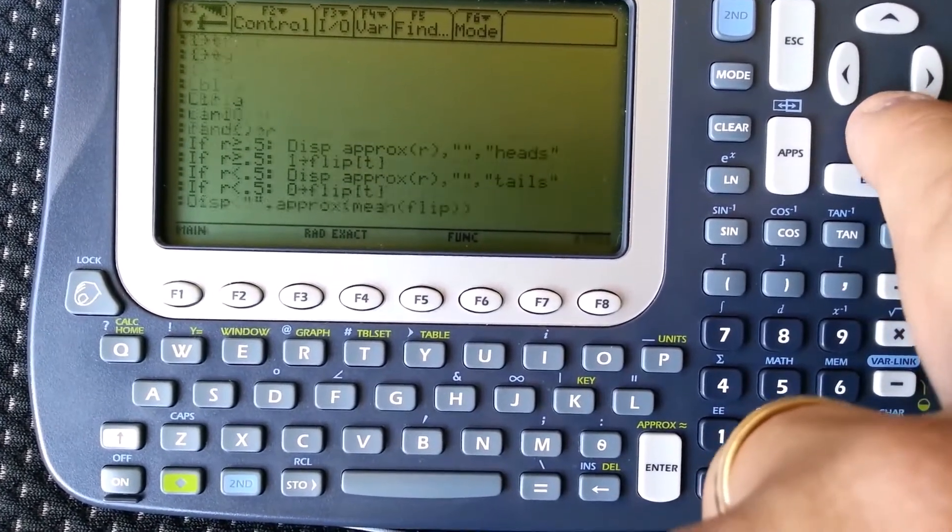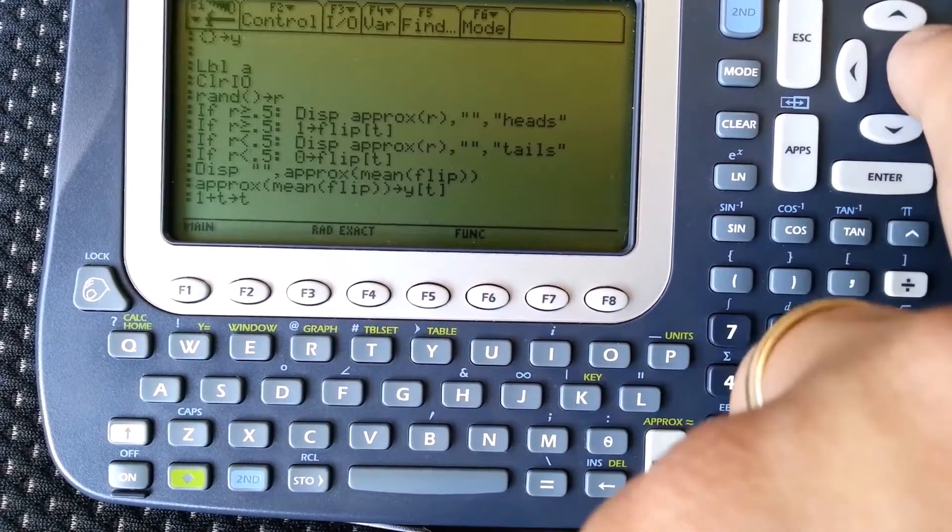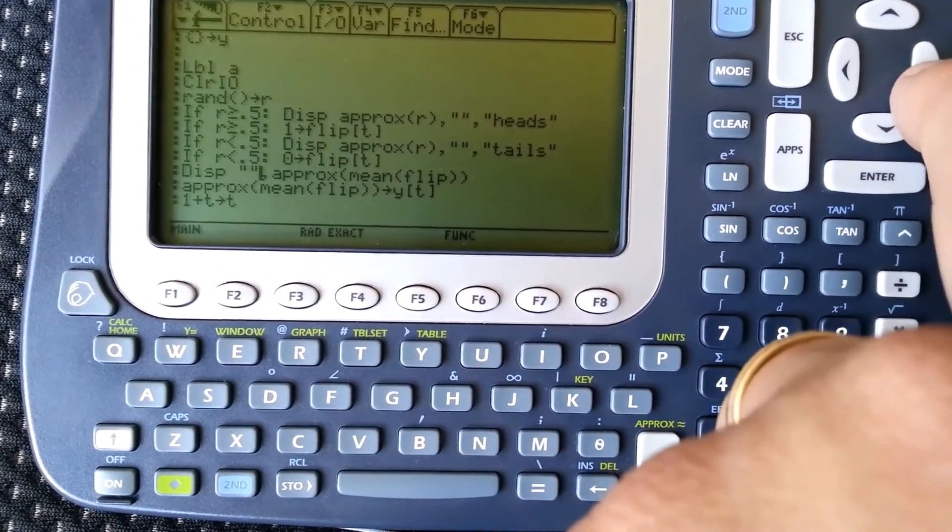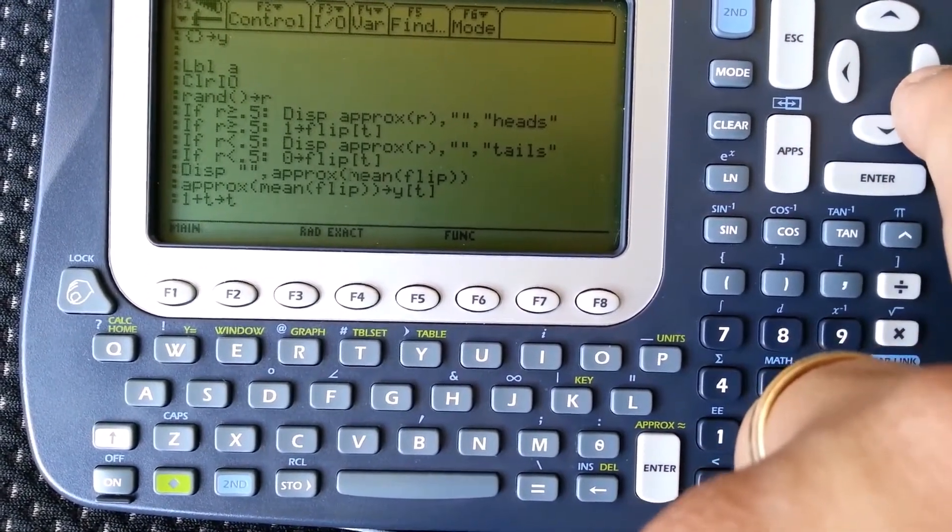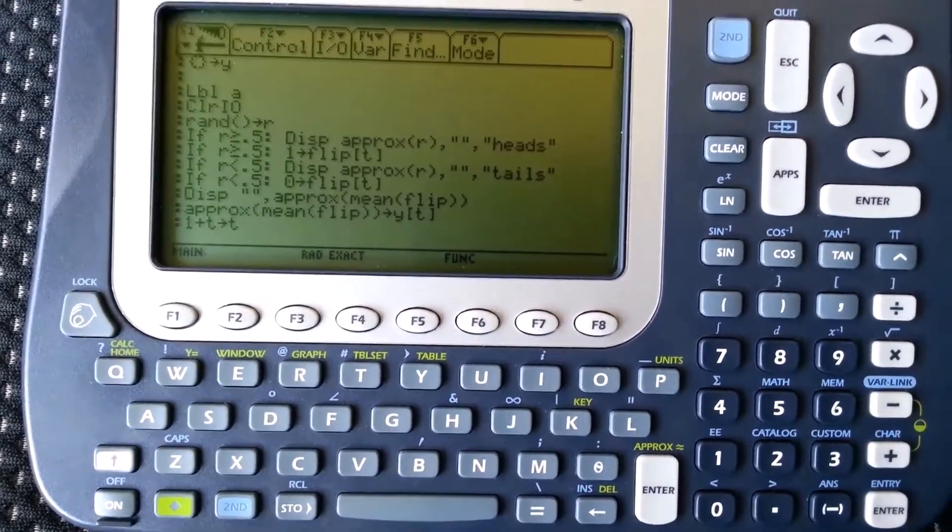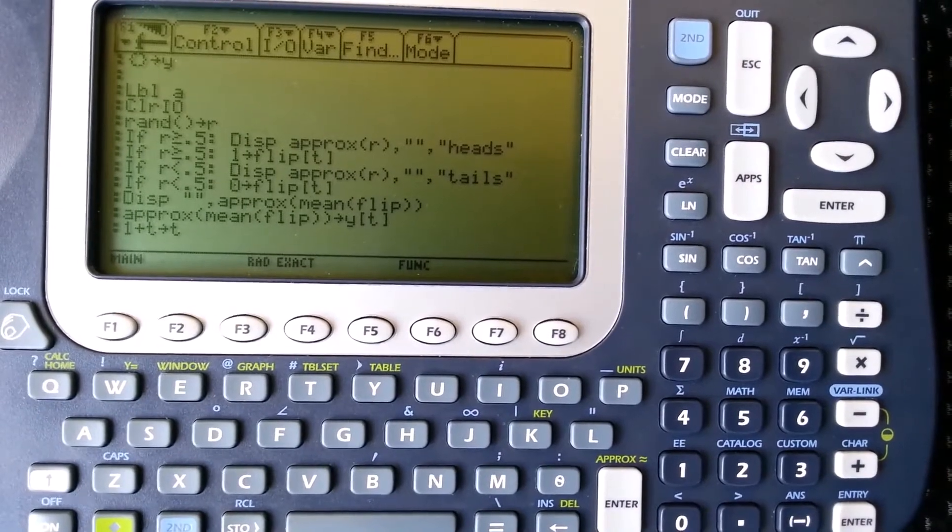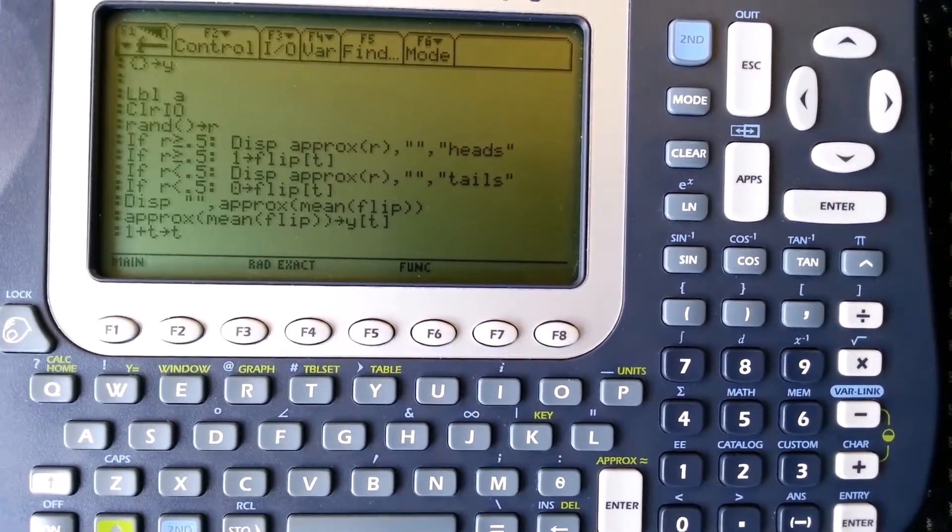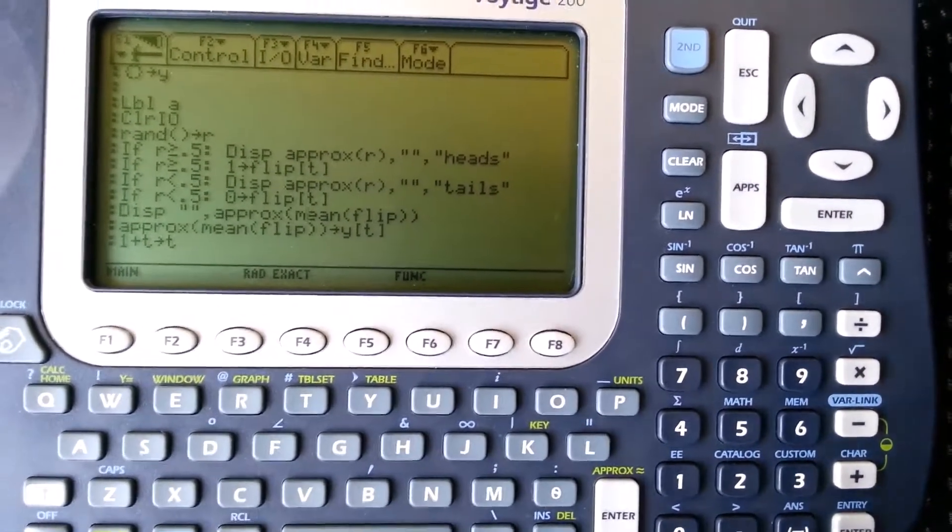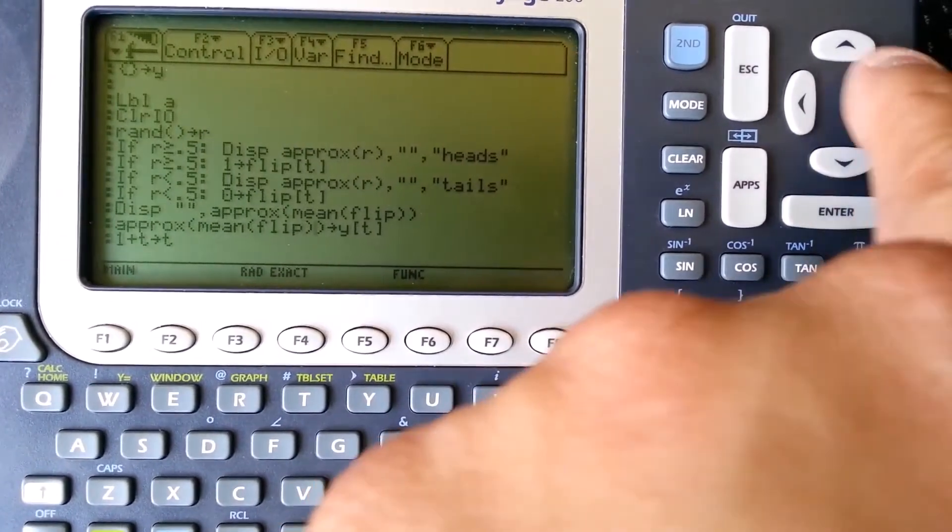If it's less than 0.5, I display it again and I store tails. And what I do is I keep track of the mean of the vector of 1s and 0s. If you have a vector of 1s and 0s, the mean of that vector is just a probability, a percent. And I also store that percent to a vector called y.